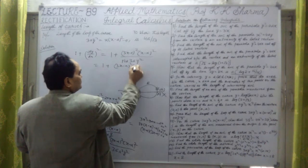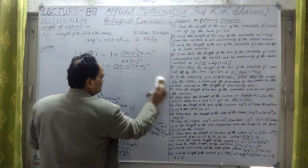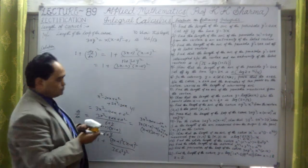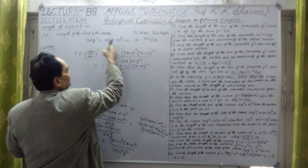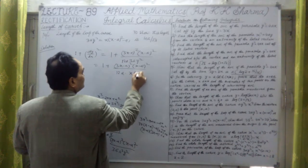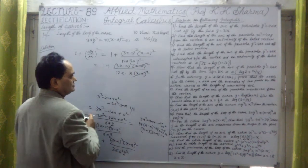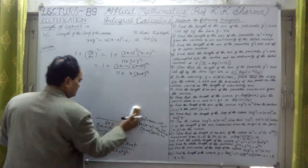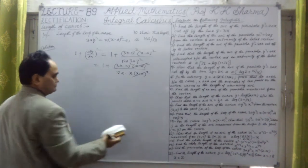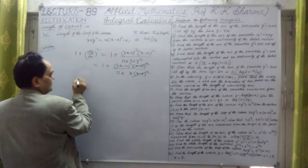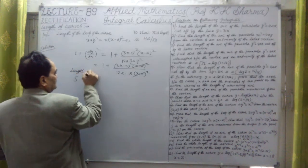Substituting 3ay² = x(x-a)² into the denominator: the (x-a)² terms cancel, leaving 1 + (3x-a)²/(12ax). Combining over a common denominator: 1 + (dy/dx)² = [12ax + (3x-a)²] / (12ax). Expanding (3x-a)² = 9x² + a² - 6ax, so the numerator becomes 9x² + 6ax + a² = (3x+a)².